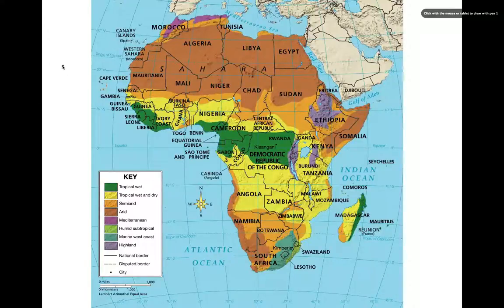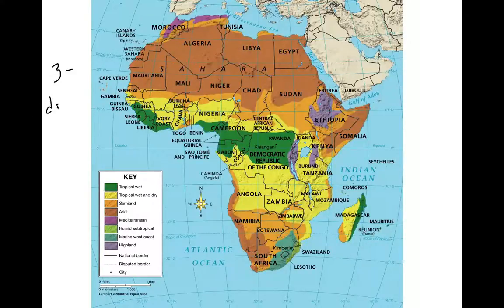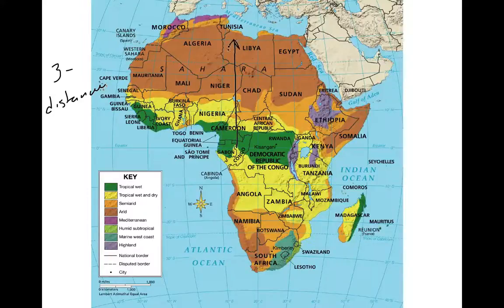When we look at climate and vegetation, there are three things you should know. The first is that distance from the equator is a huge factor. As we can see, the farther away you get in either direction from the equator, the drier it gets — it leads to dryness.